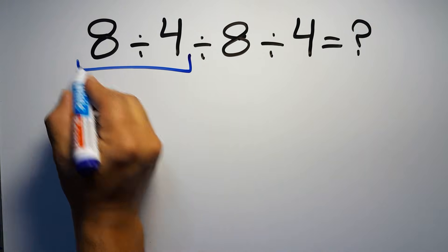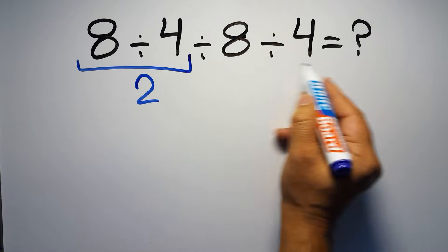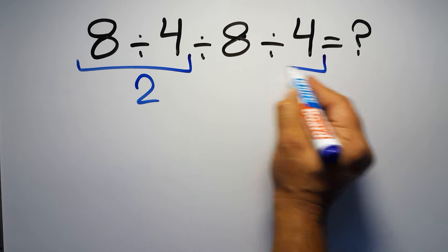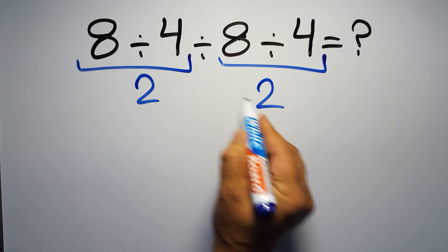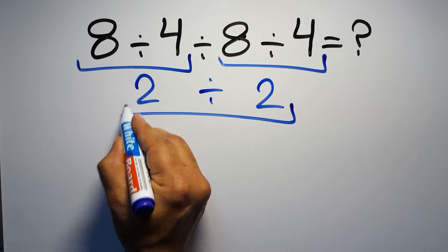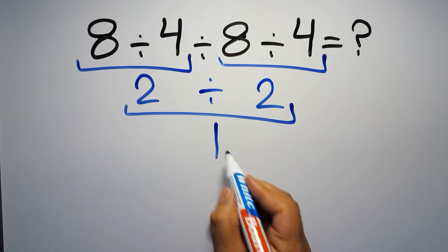8 divided by 4 gives us 2, and again here we have 8 divided by 4, so 2 divided by 2 equals 1, but this answer is not correct